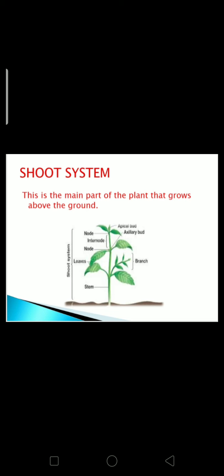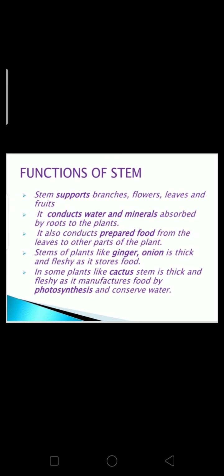Now we will discuss functions of stem. Stem supports branches, flowers, leaves, and fruits. It conducts water and minerals absorbed by roots to the plant. It also conducts prepared food from the leaves to other parts of the plant. Stems of plants like ginger and onion are thick and fleshy as they store food. In some plants like cactus, the stem is thick and fleshy as it manufactures food by photosynthesis and conserves water. Thank you.